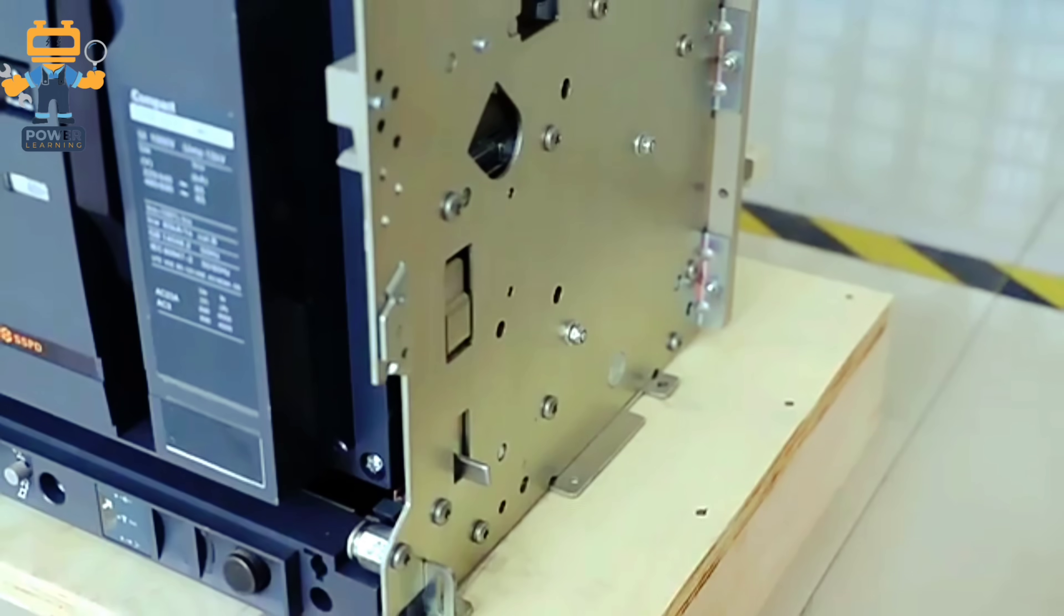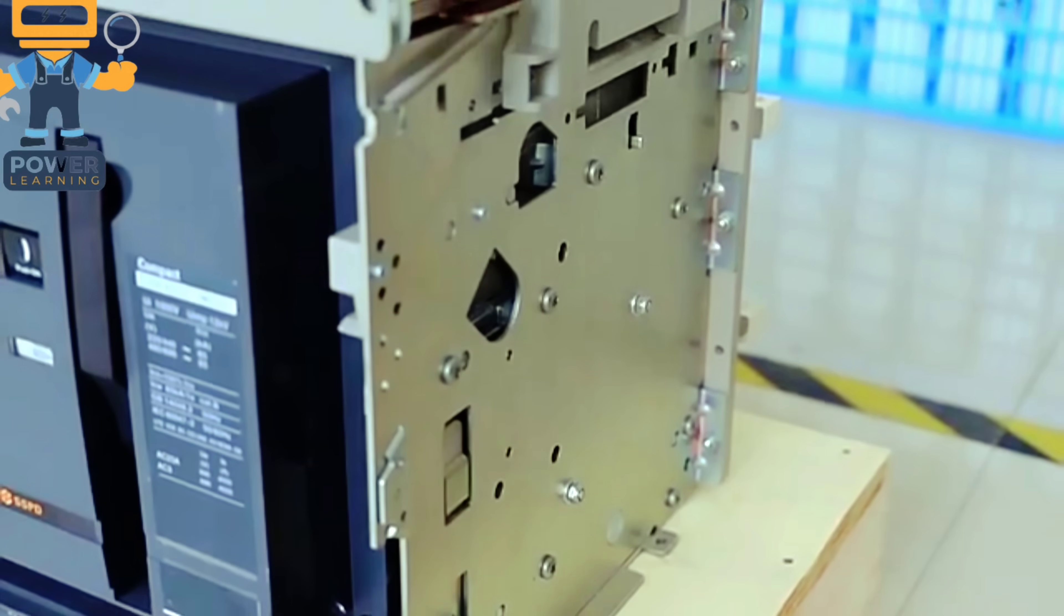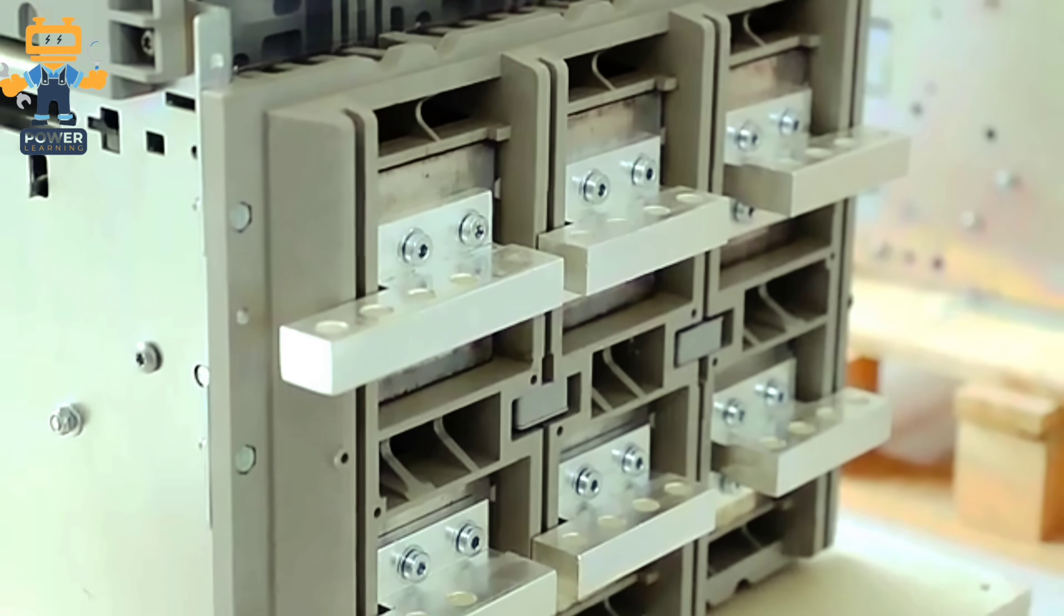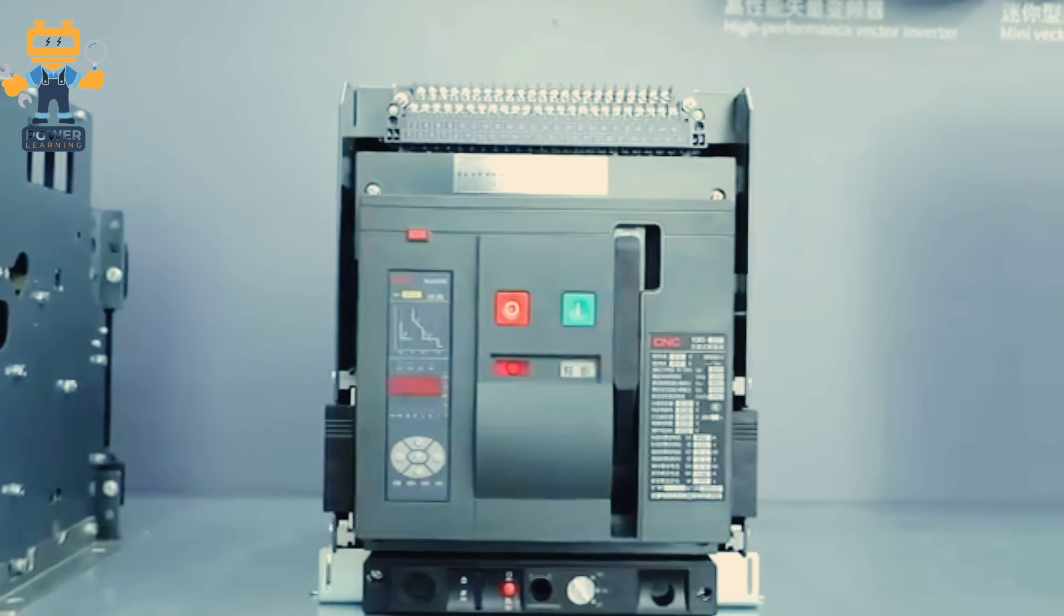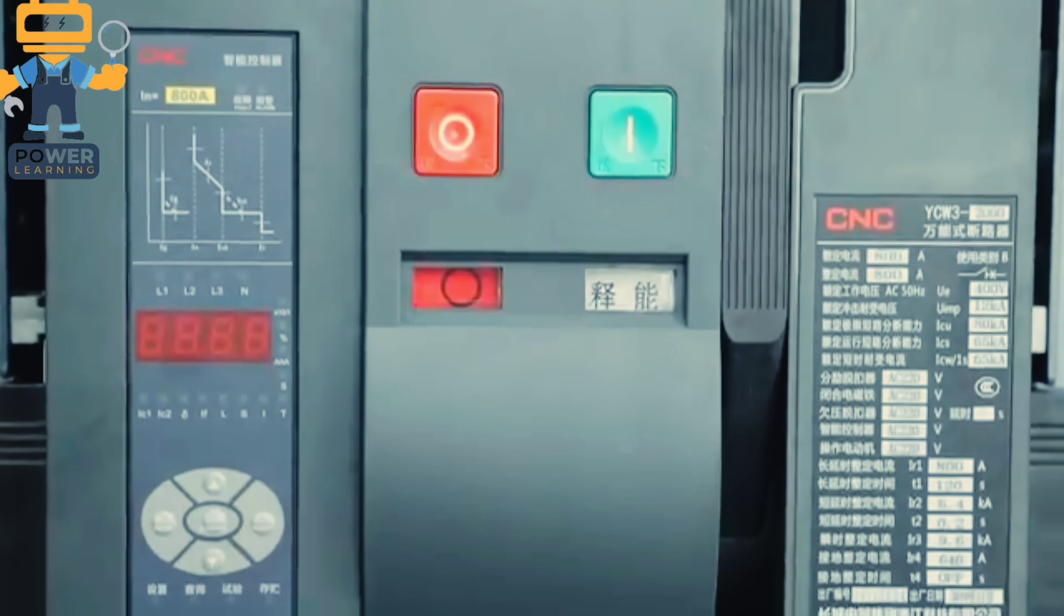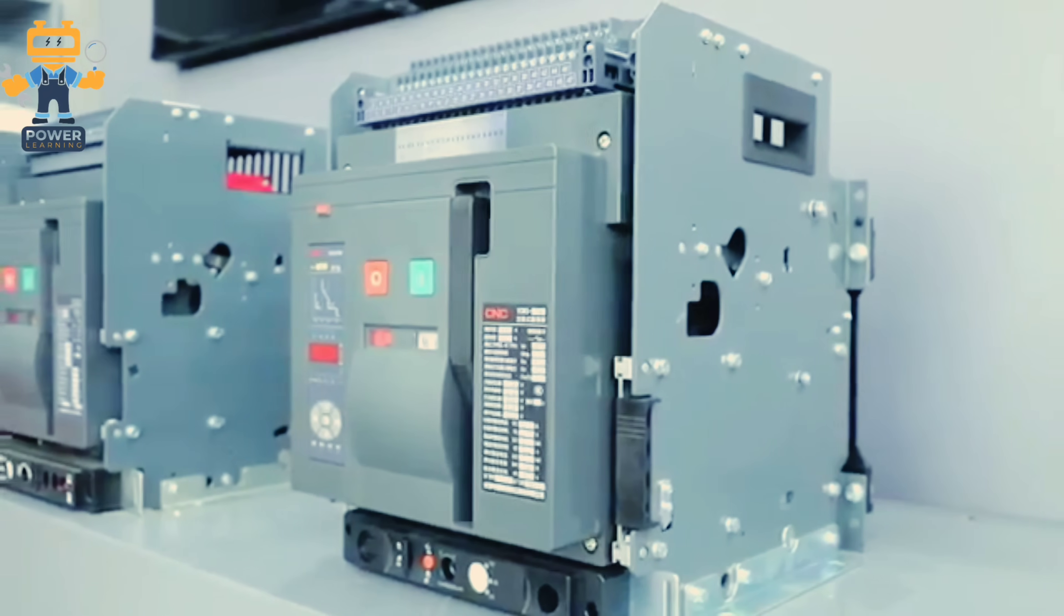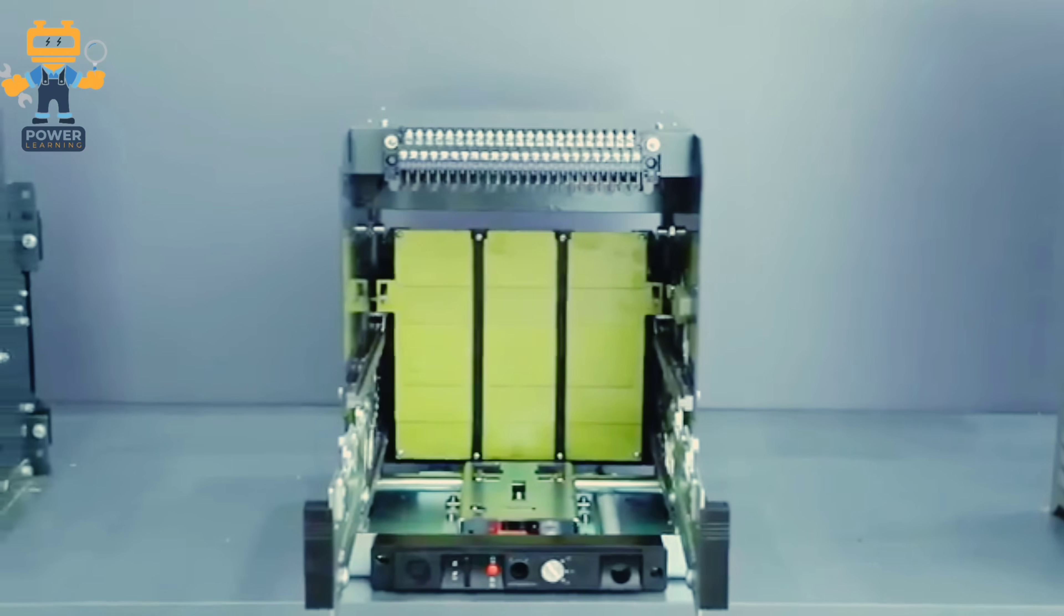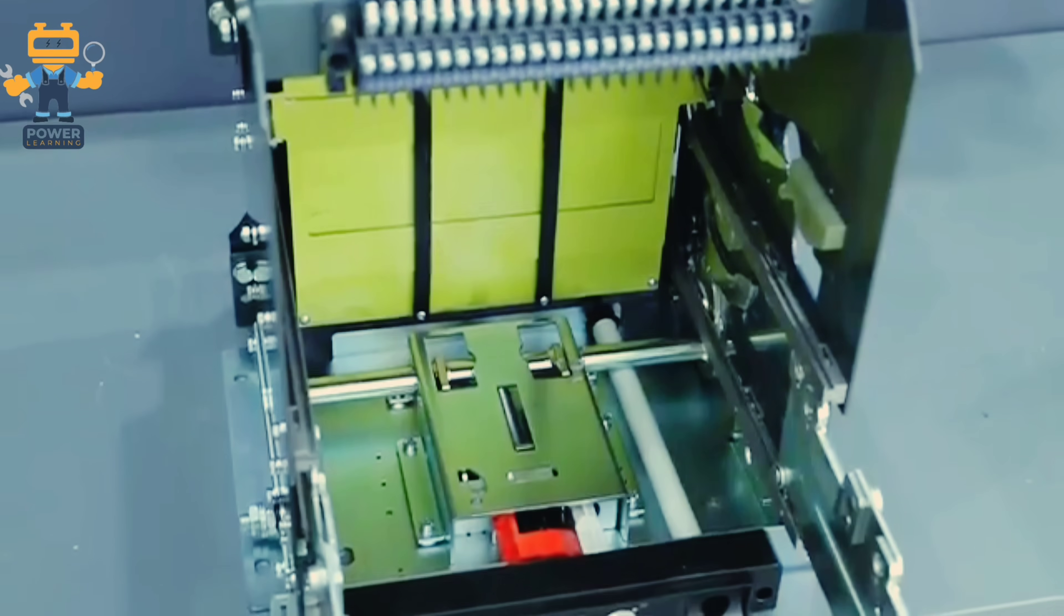My dear friends, ACBs we are using for different applications and different types of use. ACB ratings start from 630 amps to 6300 amps. In between this we have different ratings like 630, 800 amps, 1000 amps, 1250 amps, 1600 amps, 2000 amps, 2500 amps, 3200 amps, 4000 amps, and 6300 amps.